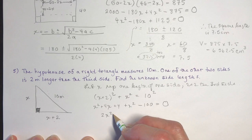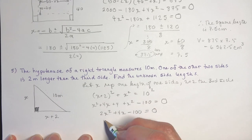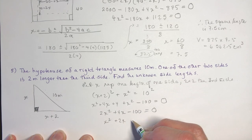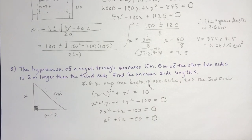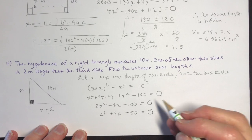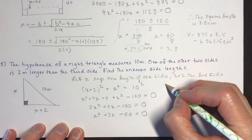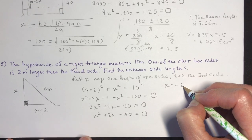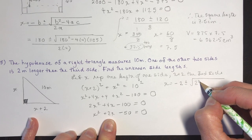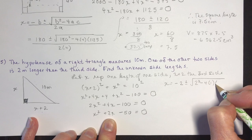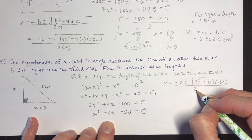Expanding: 2x squared plus 4x minus 100 equals zero. Dividing by 2: x squared plus 2x minus 50 equals zero. Looking for factors that multiply to negative 50 and add to 2 — that doesn't factor nicely, so let's use the quadratic formula.